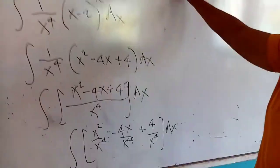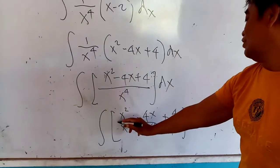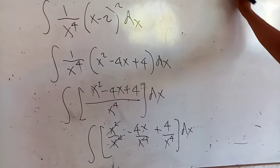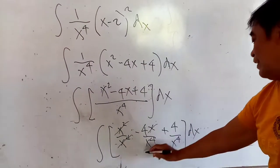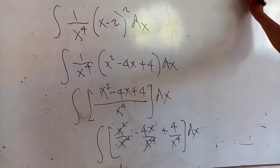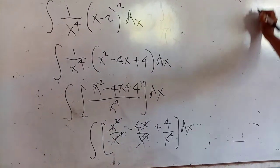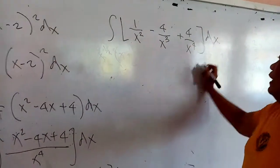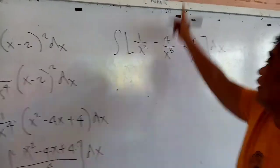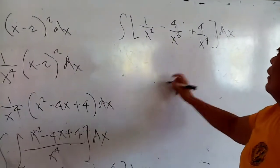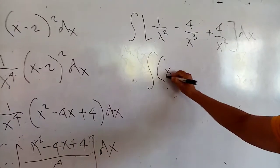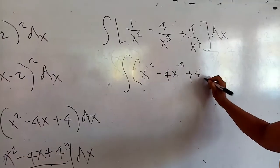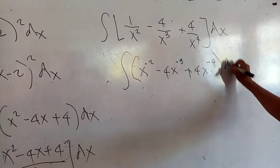To simplify the boundary of integration — I divide your numerator by your denominator — that would be 1 all over x squared, minus 4x divided by x to the 3rd power, then plus 4 all over x to the 4, bracket times the differential dx. Now, look at these three fractions — I have to bring the denominators up: that would be x to the negative 2, minus 4 times x to the negative 3, plus 4 times x to the negative 4, times dx.